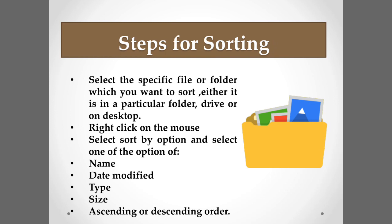In a computer, sorting means to arrange the files with respect to their name, type, date modified, or size. It depends upon the user by which value they want to sort the files. To sort a file, first select the files you want to sort, right-click with the mouse, and you will find the option of Sort By.